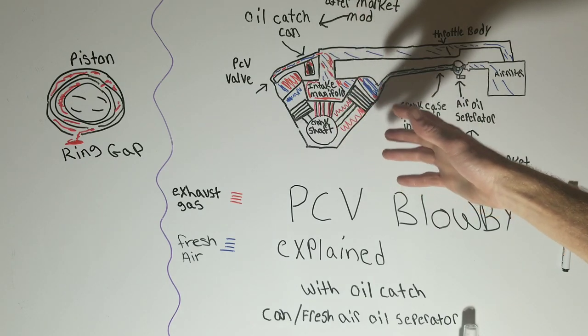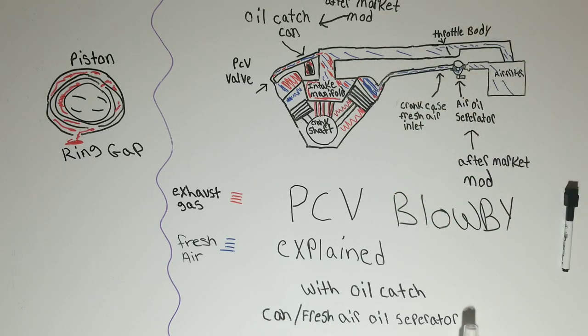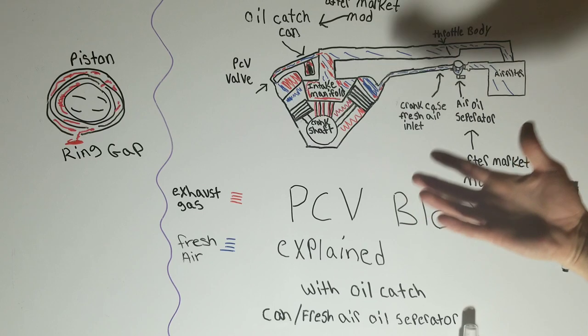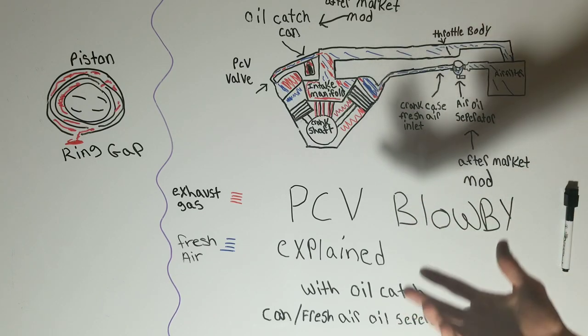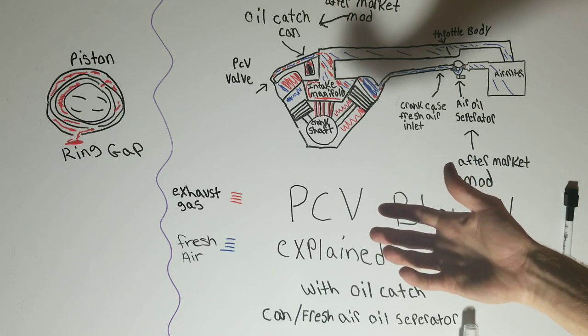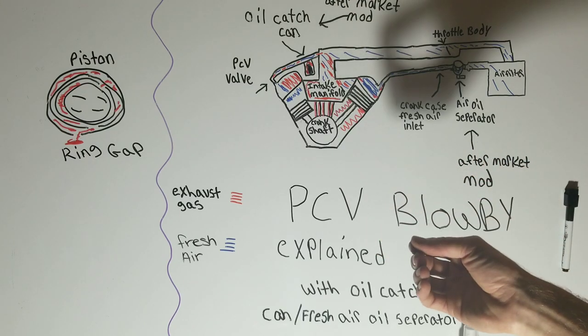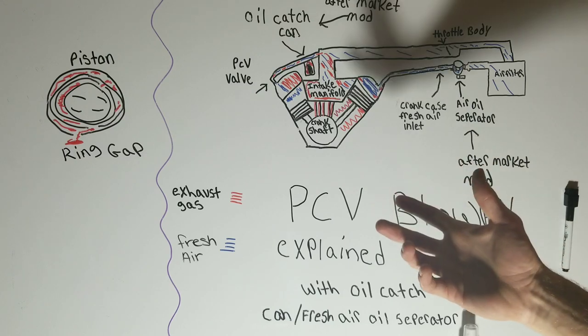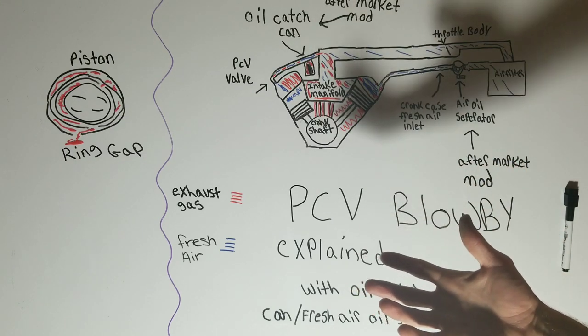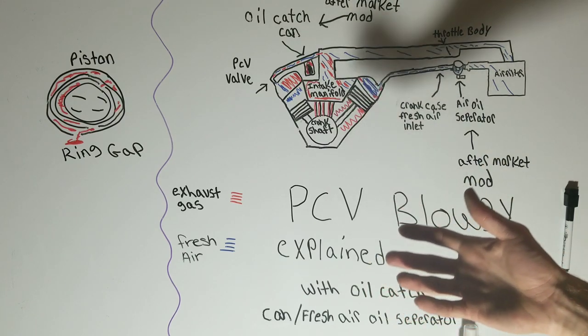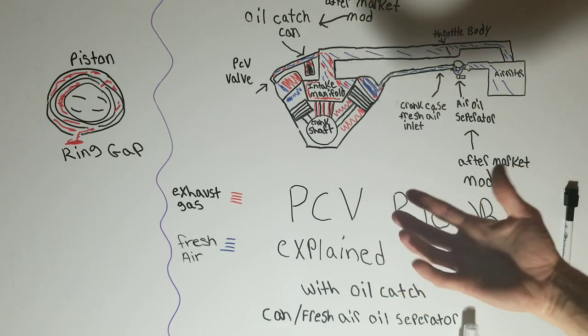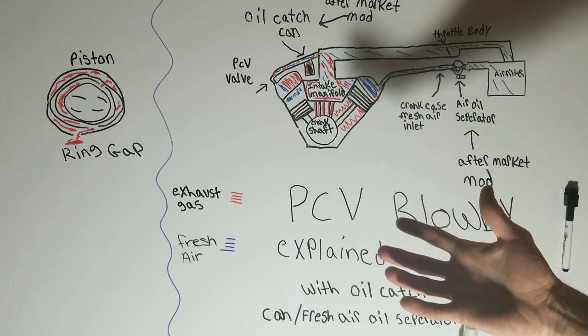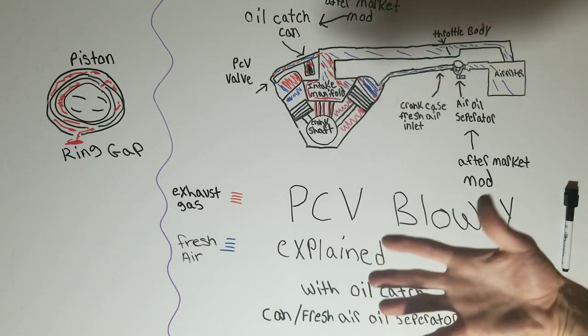But if pressure is too high from a worn engine or clogged or stuck PCV valve, you could damage your seals. Then the leak would cause oil to be pretty bad. And these new direct injection engines are prone to gunk from blow-by on the intake valves because blow-by also has oil vapor and it doesn't have fuel sprayed on constantly to clean the intake valves. So you could add an oil catch can and clean the PCV valve from time to time so maybe this wouldn't happen as bad with your seals.